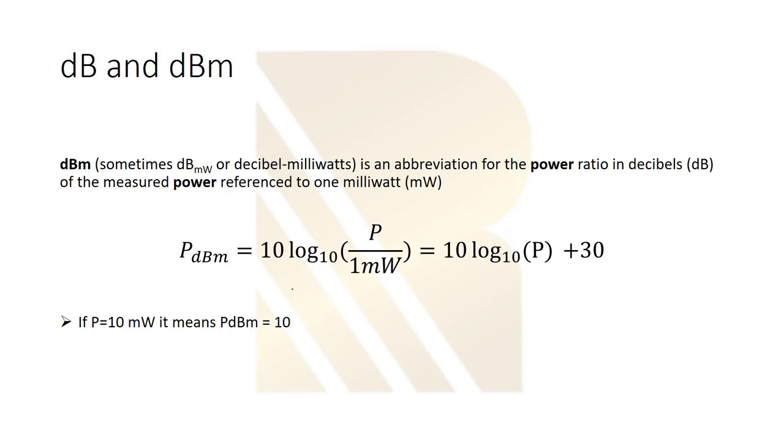We also can write the P_dBm in terms of dB. How can we write this? It's exactly like this, so P_dBm is equal to P_dB plus 30. It's a very good formula we can use.